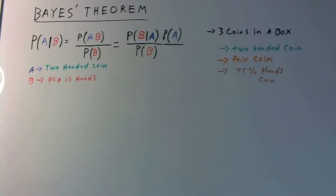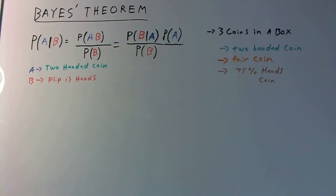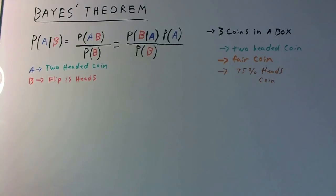In this case, our A is going to be the two-headed coin — that's the probability we want to calculate. And B, our given, is the fact that it came up heads. So let's go calculate the probability of our given first, since that doesn't change. The probability of B.